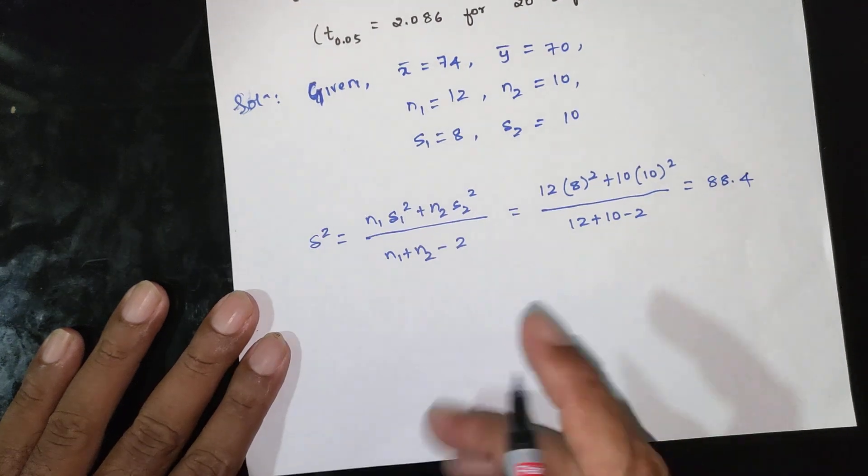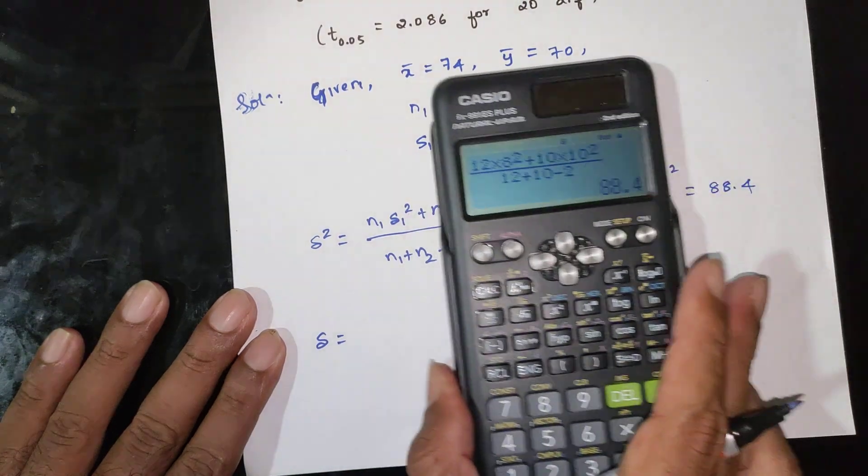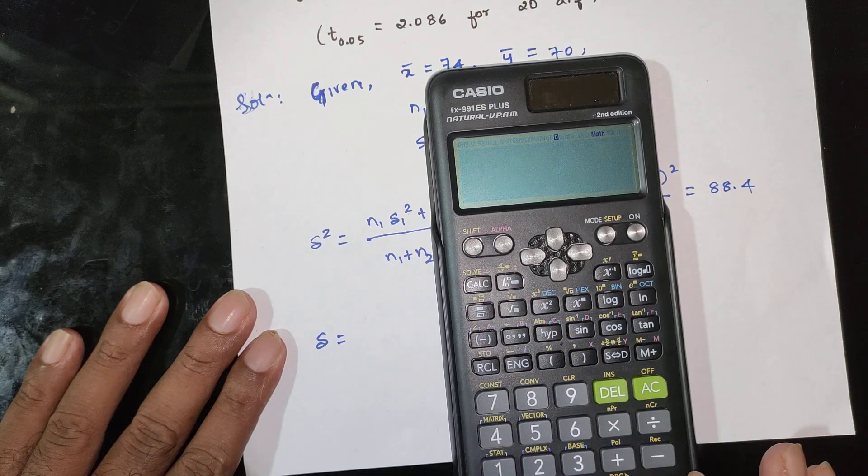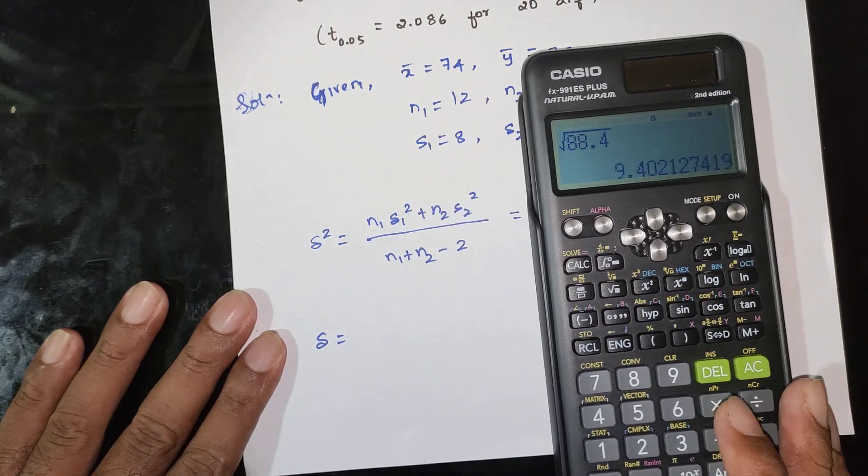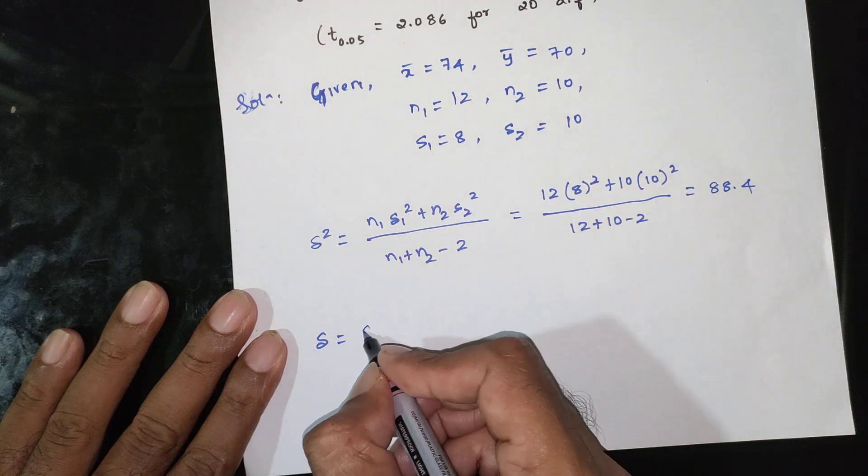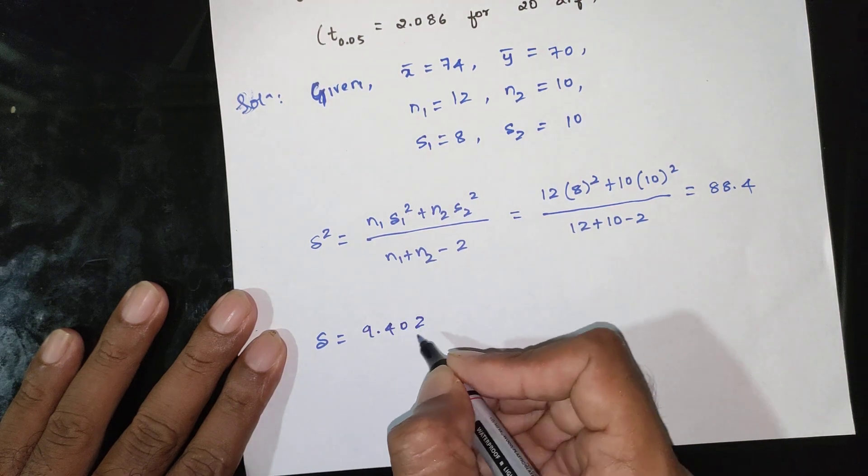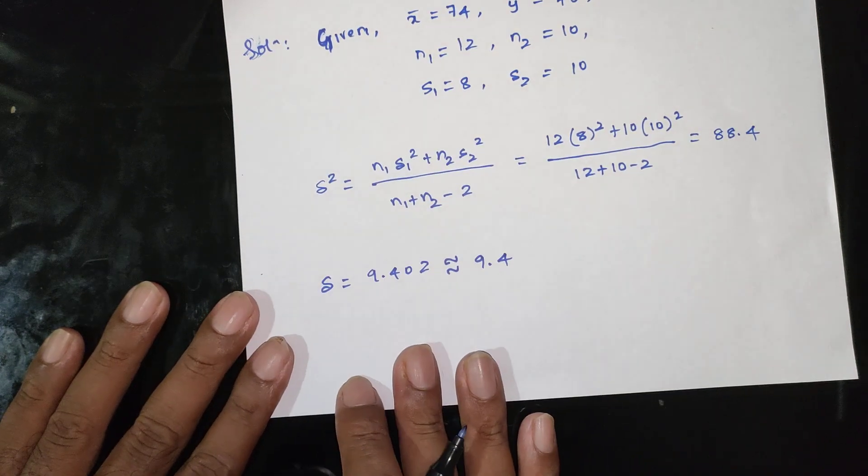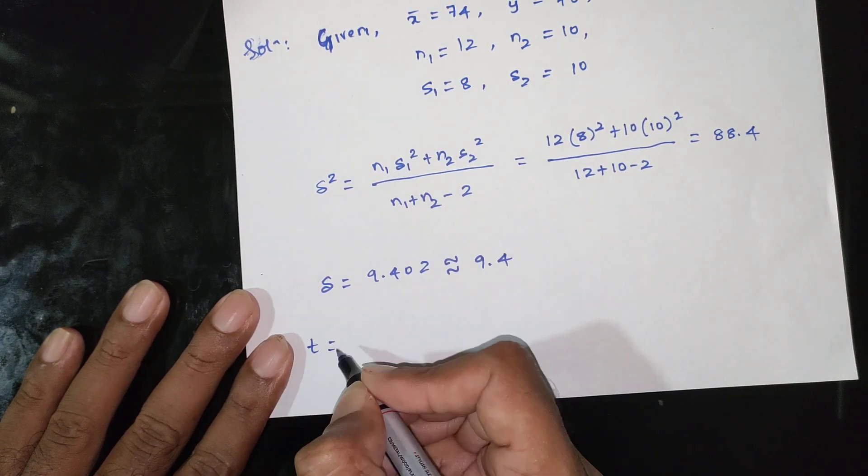s equals the square root of 88.4, which equals 9.402, approximately equal to 9.40.